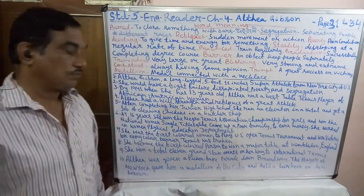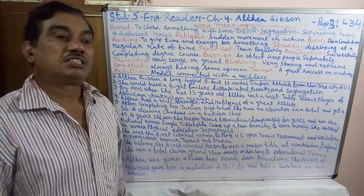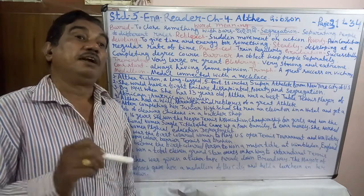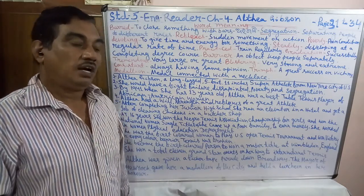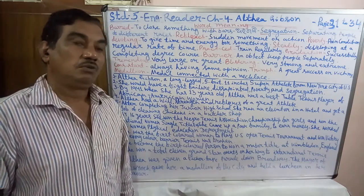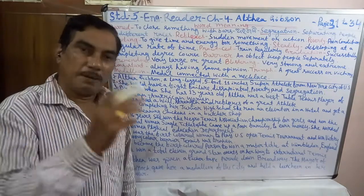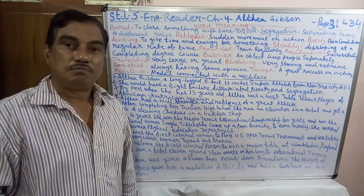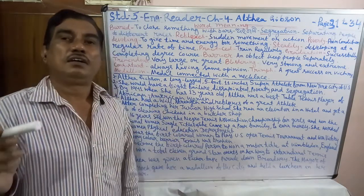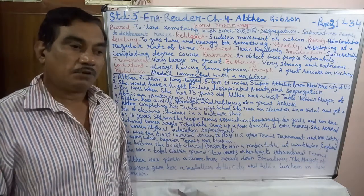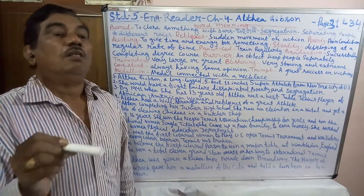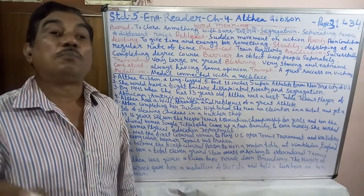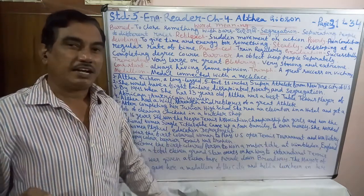She won a total of 11 grand slam events on her way to international tennis fame. Lastly, when she returned from abroad, her native place is Newark. She came back having received medals everywhere, and Althea was given a ticker tape parade down Broadway.